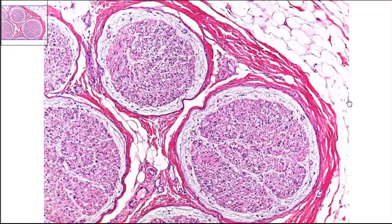What we can see in this view is the most outer edge of the nerve. That means this connective tissue covering is going to be the epineurium.